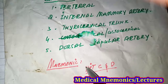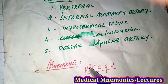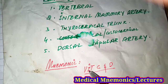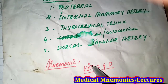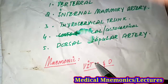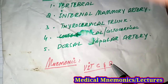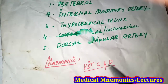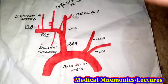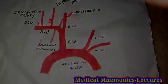V stands for the vertebral artery, I for the internal mammary artery (or internal thoracic artery), T for the thyrocervical trunk, C for the costocervical trunk, and D for the dorsal scapular artery. Thanks for watching the video.